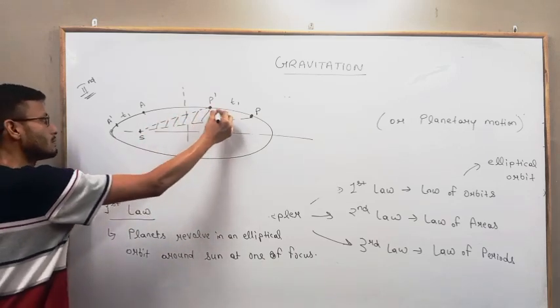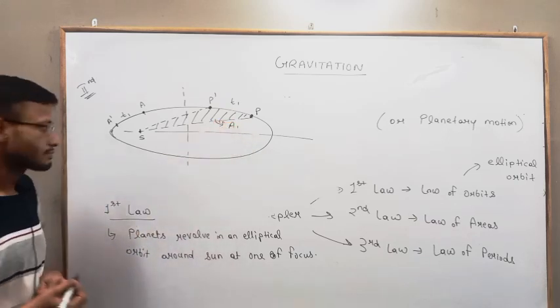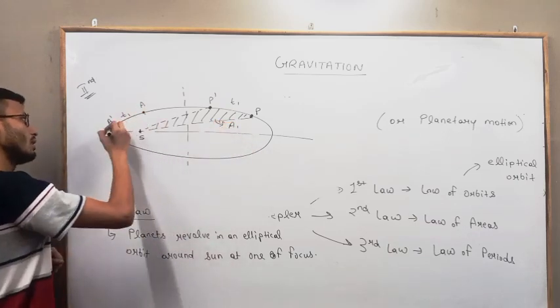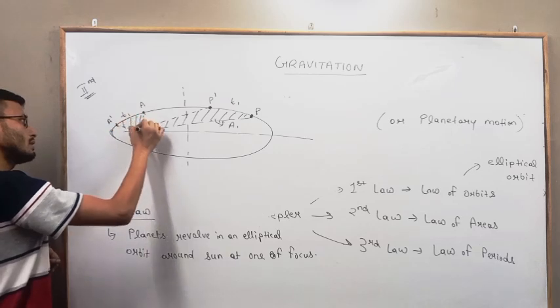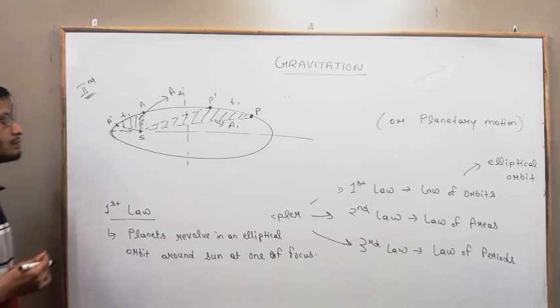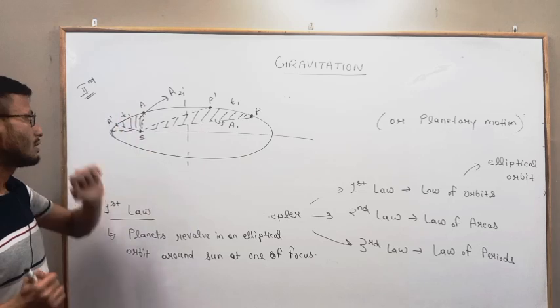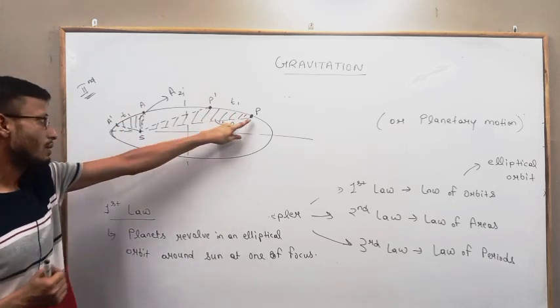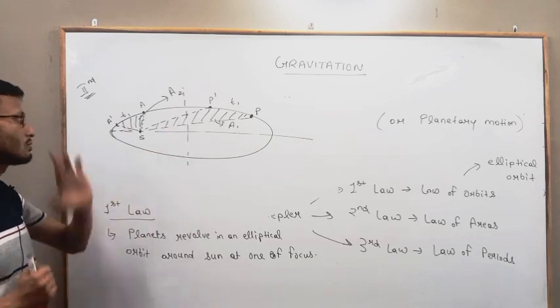This area, say it is A1, and here this area say A2. So what the second law tells us is that in equal time intervals, the area swept by the planet with the sun is the same.